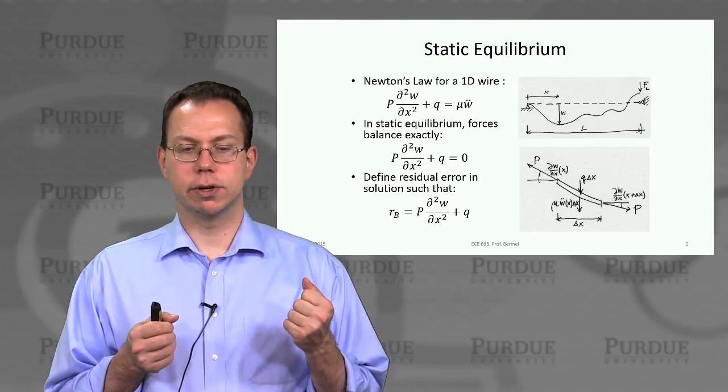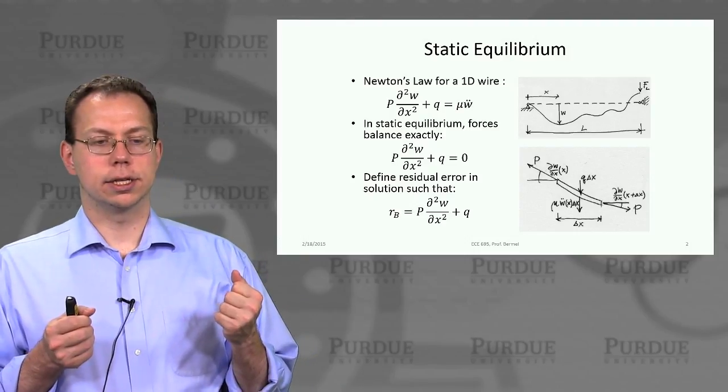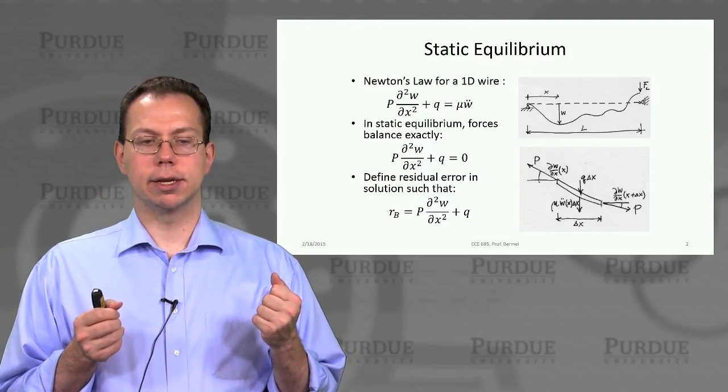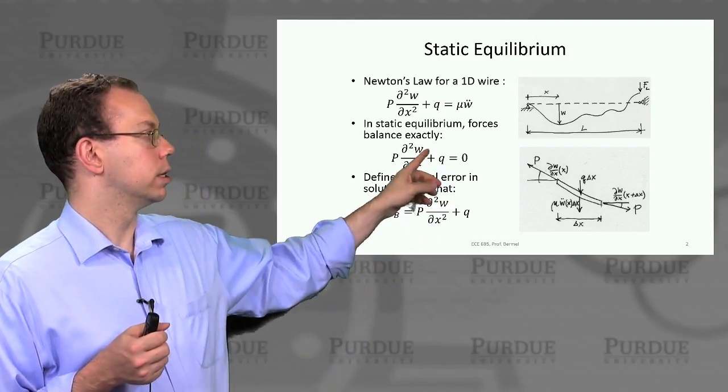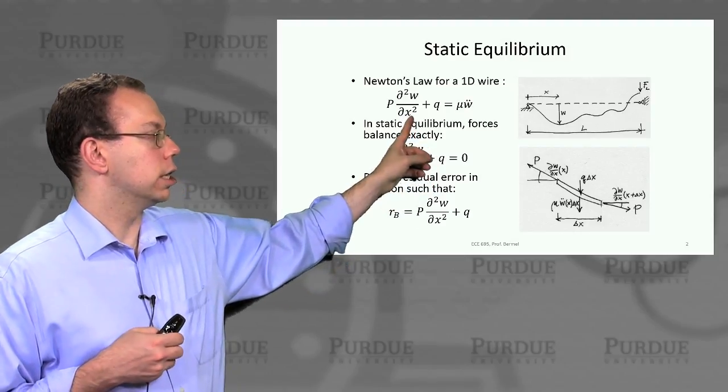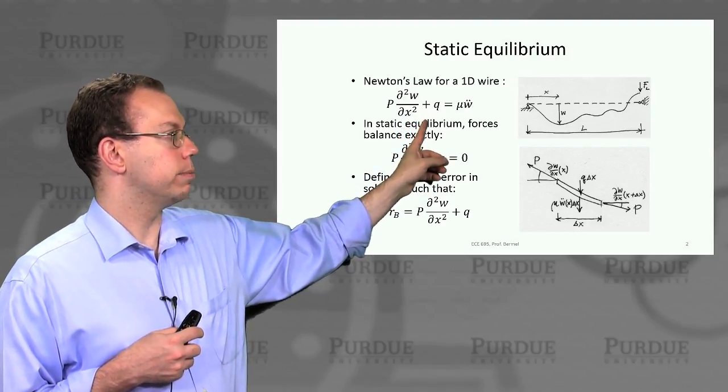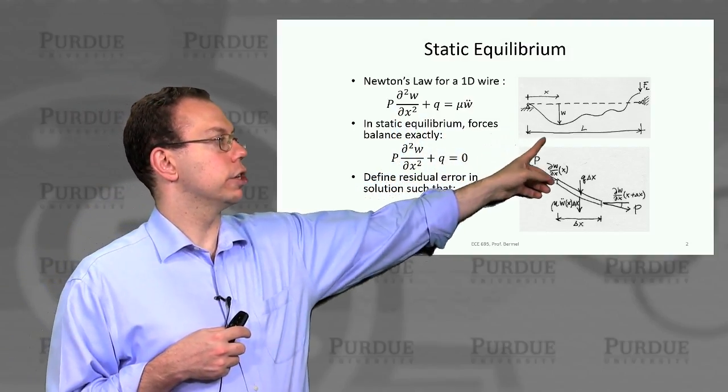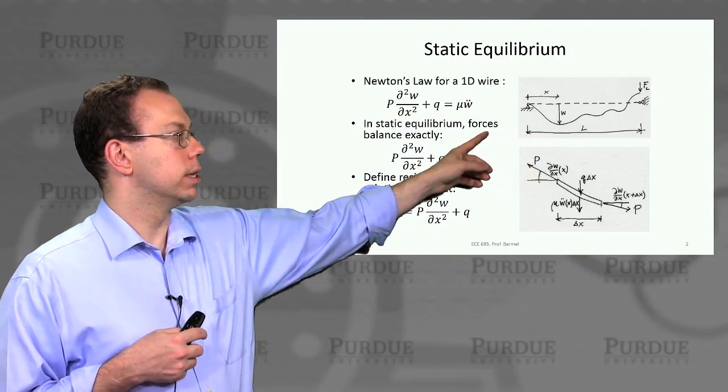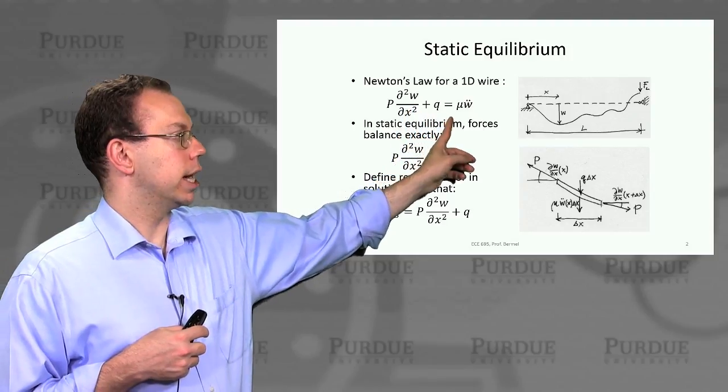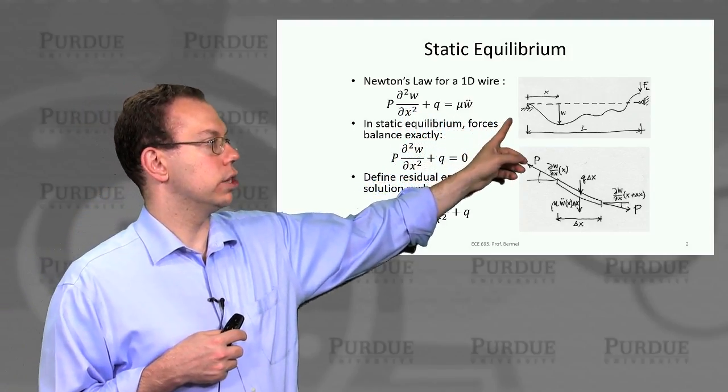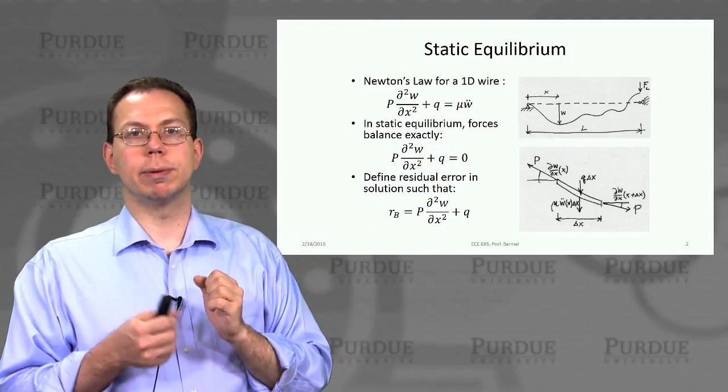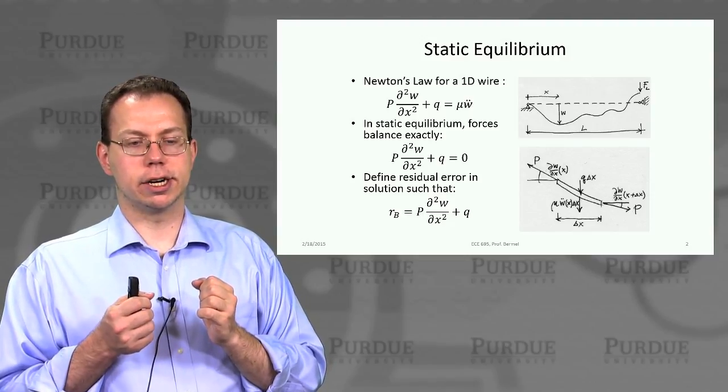We can write down the solution for F equals ma in this form. Here are two forces that are impacting the wire. One that's coming from the curvature of the wire, creating tension. And then we have Q, which is essentially a uniform force, maybe from gravity, that's applied to the wire.